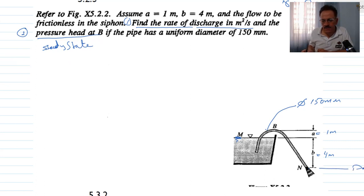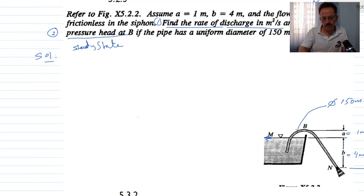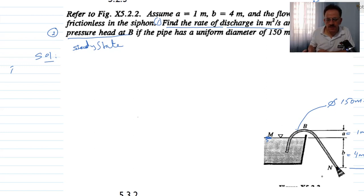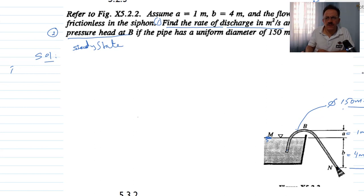Let us set the datum here and begin the solution. We apply the Bernoulli equation. Since the pipe has the same diameter throughout, finding the velocity at any one point gives us the velocity everywhere. Therefore, we know the area of this pipe is pi times 0.15 squared over 4. Once we have velocity anywhere in the pipe, we can calculate Q.